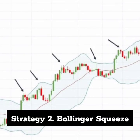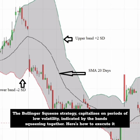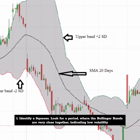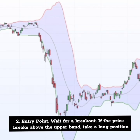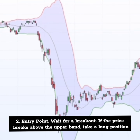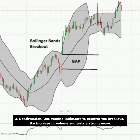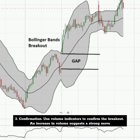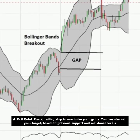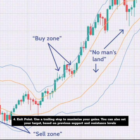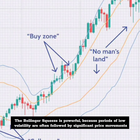Strategy 2: Bollinger Squeeze. The Bollinger Squeeze strategy capitalizes on periods of low volatility, indicated by the bands squeezing together. First, identify a squeeze — look for a period where the Bollinger Bands are very close together, indicating low volatility. For the entry point, wait for a breakout: if the price breaks above the upper band, take a long position; if it breaks below the lower band, take a short position. Use volume indicators to confirm the breakout — an increase in volume suggests a strong move. For the exit, use a trailing stop to maximize your gains, or set your target based on previous support and resistance levels. The Bollinger Squeeze is powerful because periods of low volatility are often followed by significant price movements.